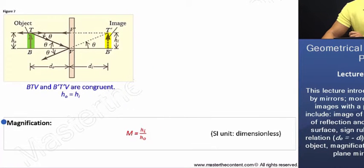Now, the ratio of the image size to the object size is called the magnification. Coming back to figure seven, there are a few other points that we should take note of.